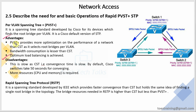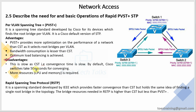PVST+ advantage: PVST+ provides more optimization on the performance of the network. CST elects one root bridge for the entire topology, while PVST+ elects a root bridge per VLAN — better optimization than Common Spanning Tree (CST). Bandwidth consumption is less than CST. PVST+ also achieves optimum load balancing. Disadvantage: this is slower than CST — convergence time is slow. PVST+ convergence time takes more time; by default, Cisco switch convergence time is 50 seconds. PVST+ also requires more CPU and memory resources.